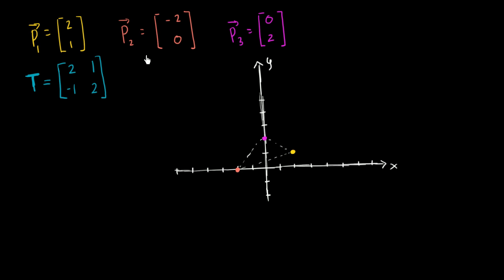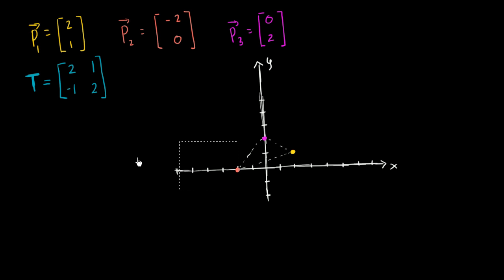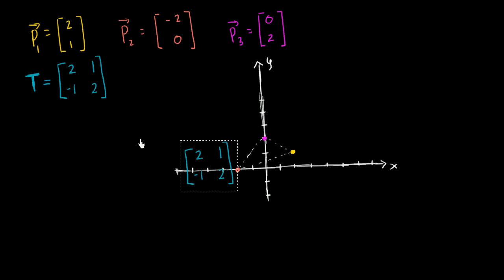Like the last video, I could apply this transformation matrix separately to each of them to see what they transform into, or instead I could take this transformation matrix and multiply it times a matrix composed of these position vectors. So let me take my transformation matrix — let me copy and paste that.